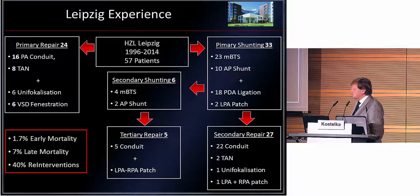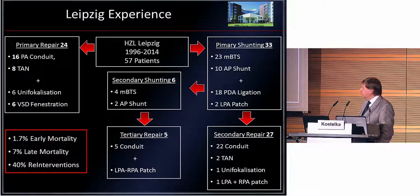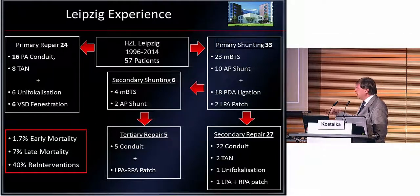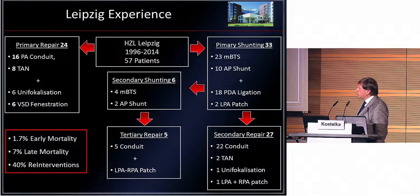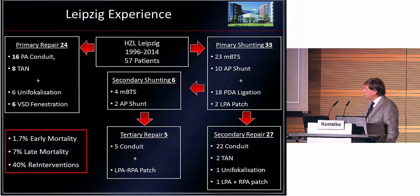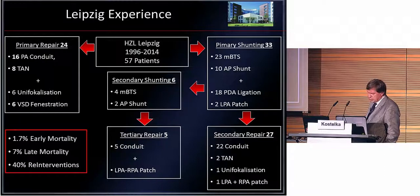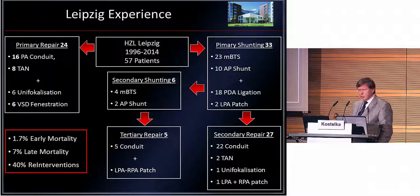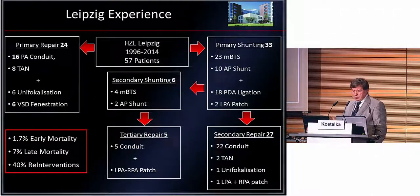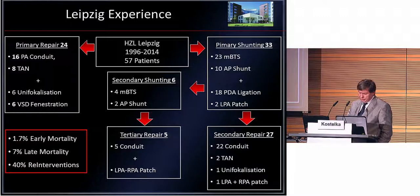For tertiary repair, there are the true patients with diminutive pulmonary arteries — conduit at age 5, and we still have to repeatedly patch the pulmonary arteries. We have a 1.7% early mortality and the same late mortality — so we are also at 90% survival — and we have had 40 reinterventions, especially for stenotic pulmonary arteries in the periphery.